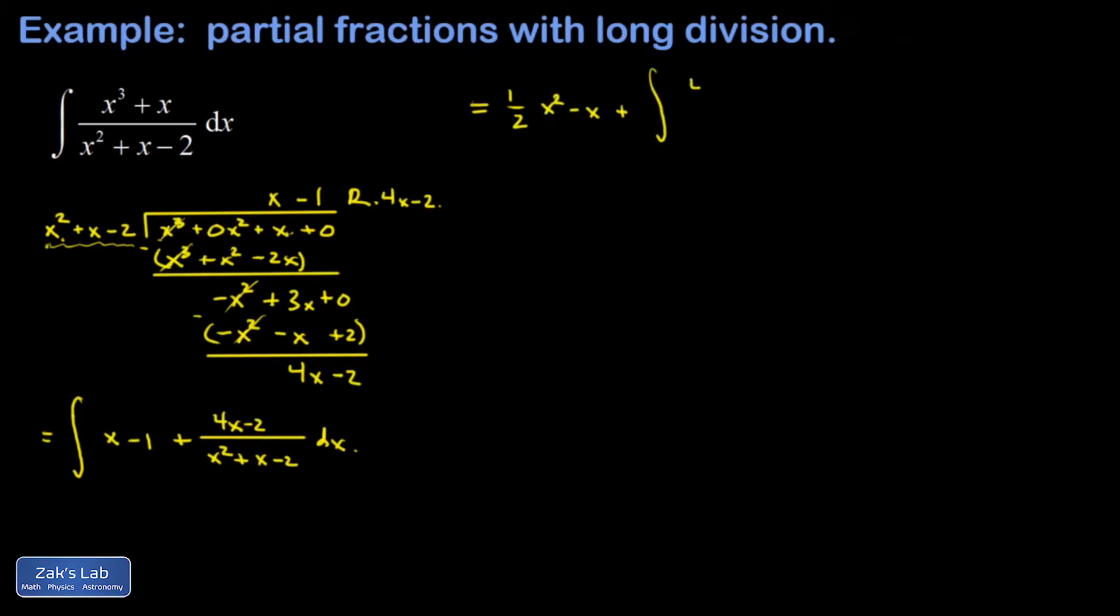And then this leftover integral, that's the piece we have to use partial fractions on. I'm going to go ahead and factor the denominator while I'm working. So x squared plus x minus 2 factors into x plus 2 multiplied by x minus 1.